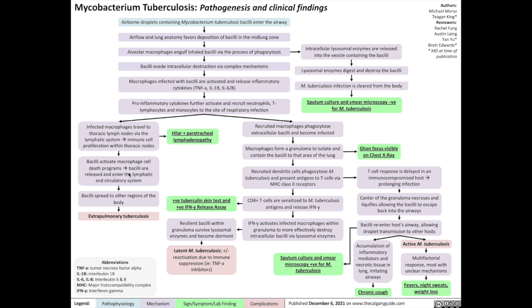Once the macrophages are dead, the bacilli are then released and enter the lymphatic and circulatory system. This is how the bacilli can then spread to other regions of the body, leading to extrapulmonary tuberculosis — TB outside the lungs.